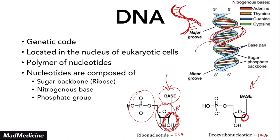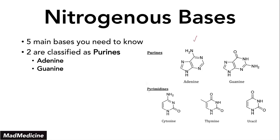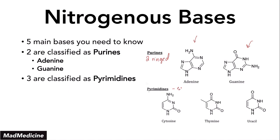Let's dive a little bit deeper and talk about these nitrogenous bases. There are five bases you need to know. Two of these bases are classified as purines — those two bases are adenine and guanine. Purines have a two-ring structure. Pyrimidines are the other type of bases, and there are three of them, and they are single-ringed. The three main pyrimidines are cytosine, thymine, and uracil. These structures are very important because they are going to determine what type of binding you're going to have.